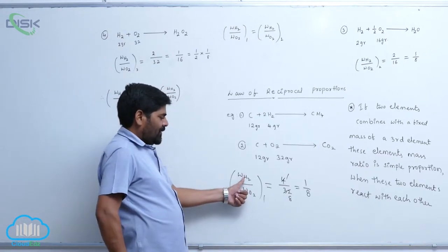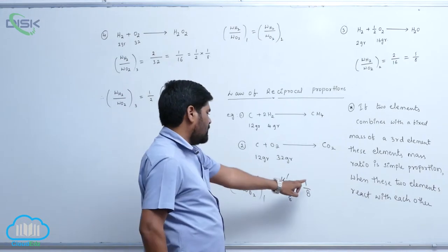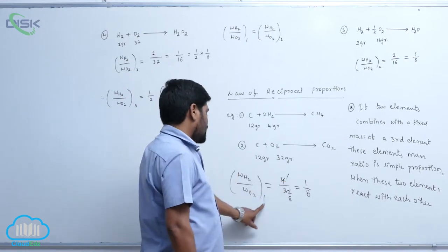In this, the ratio of weight of hydrogen and oxygen is 1 by 8. This is the first process.